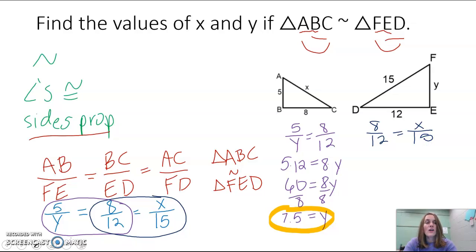It's a proportion, so I can solve using cross products. I'll take 8 times 15, and 12 times X. Multiply the numerator times the denominator of the other side. Set them equal to each other. 8 times 15 is 120. 12 times X is just 12X. But to get X by itself, I need to divide by 12, since it's multiplying with X. And 120 divided by 12 is 10. So X is equal to 10.